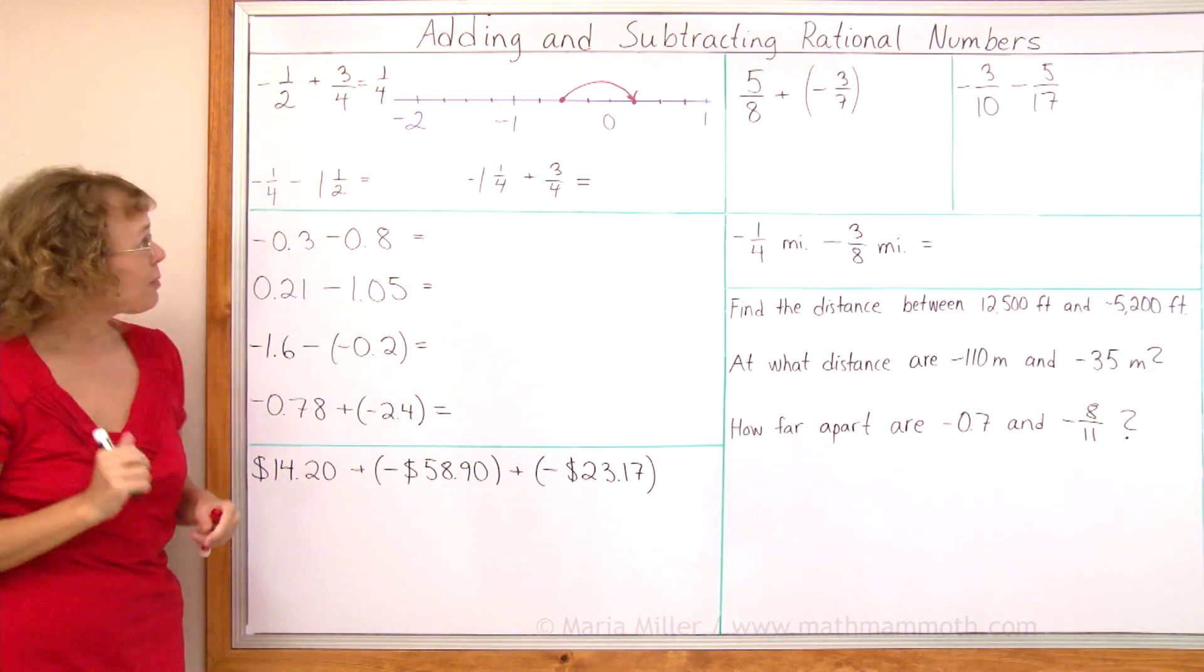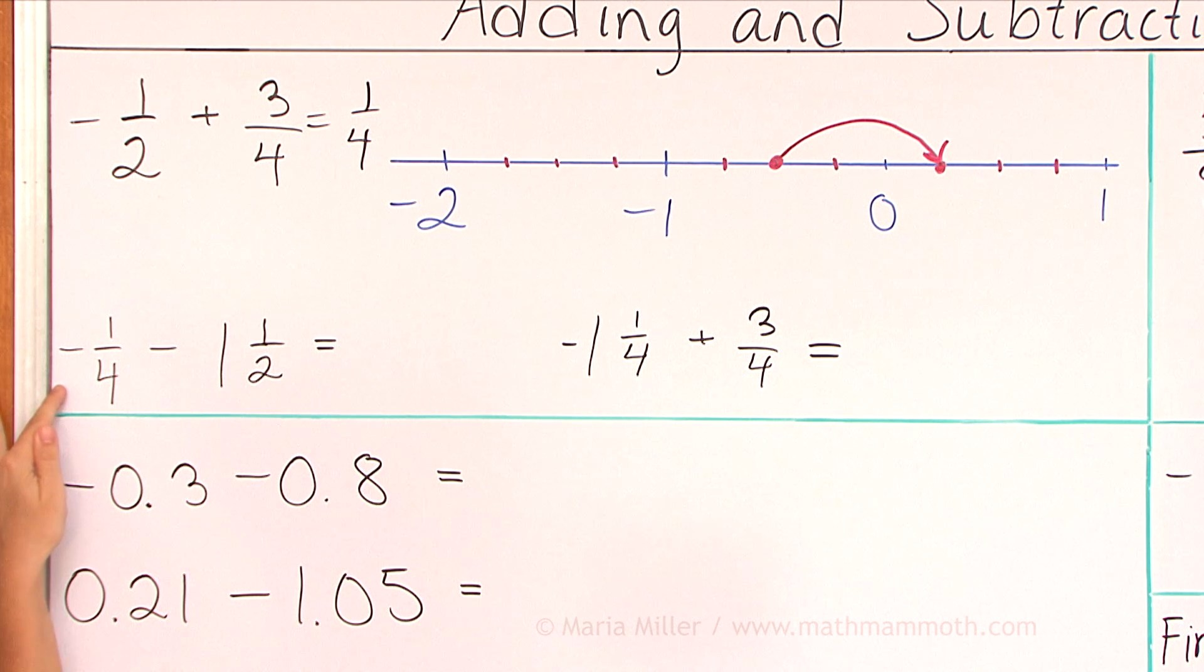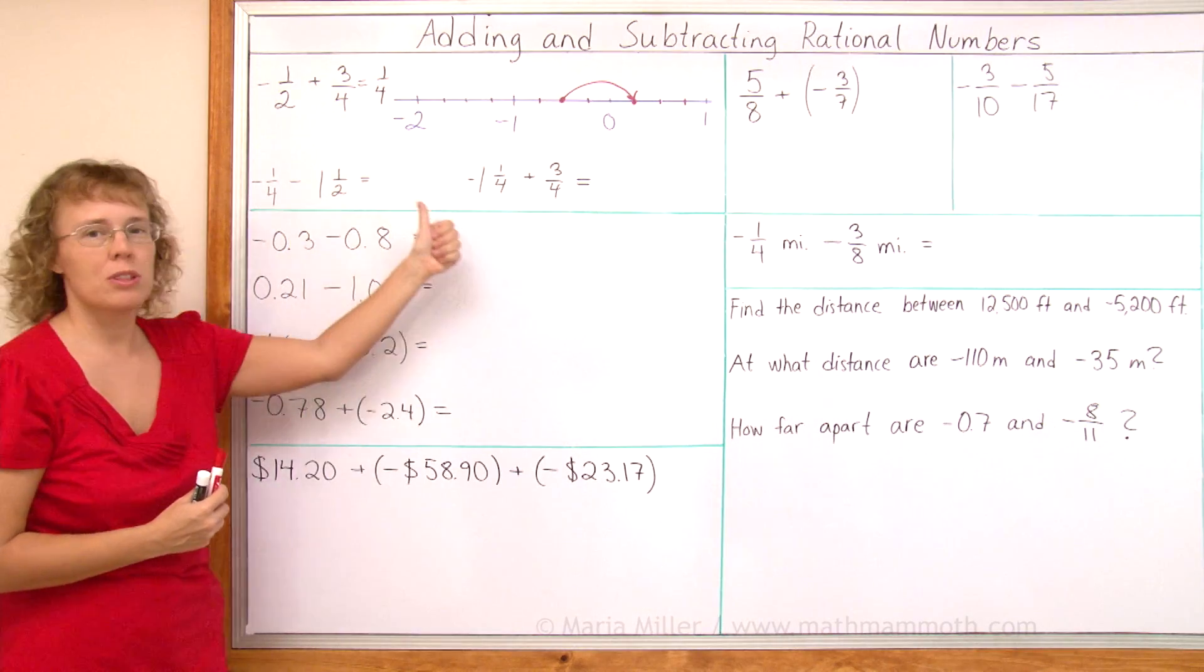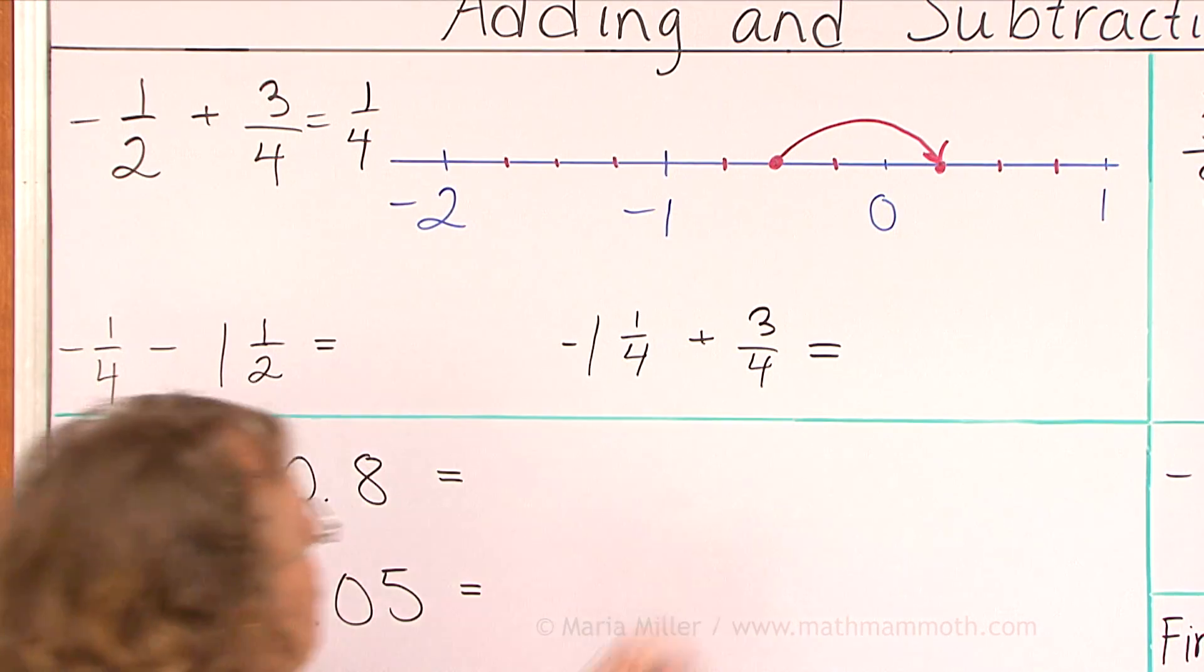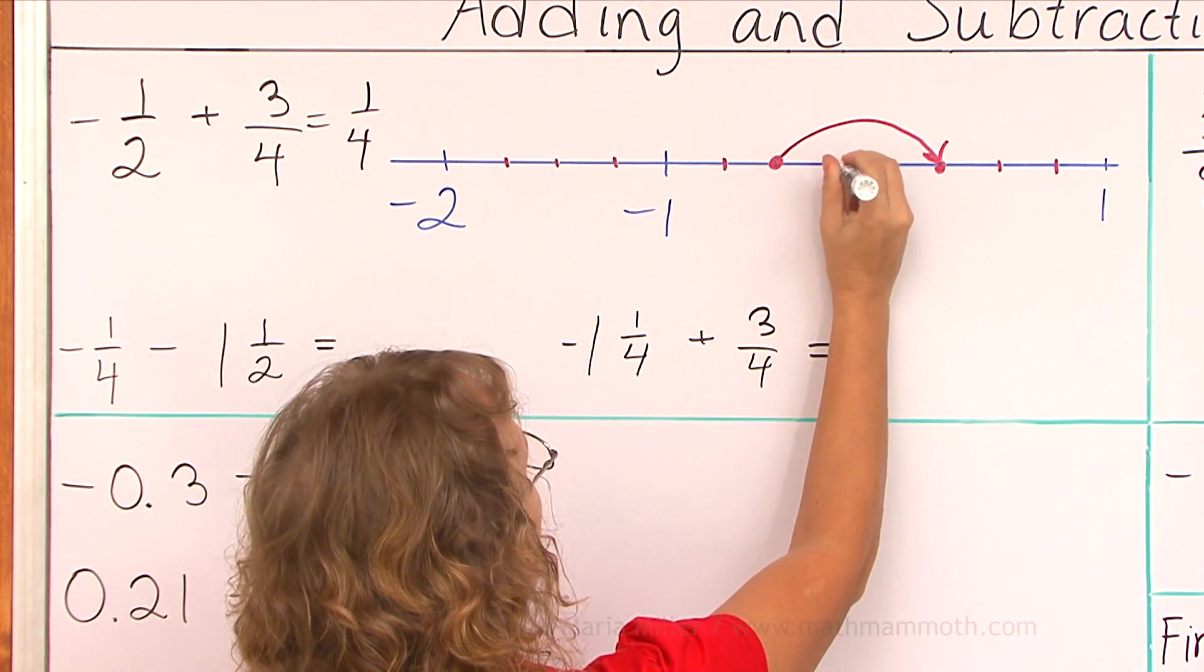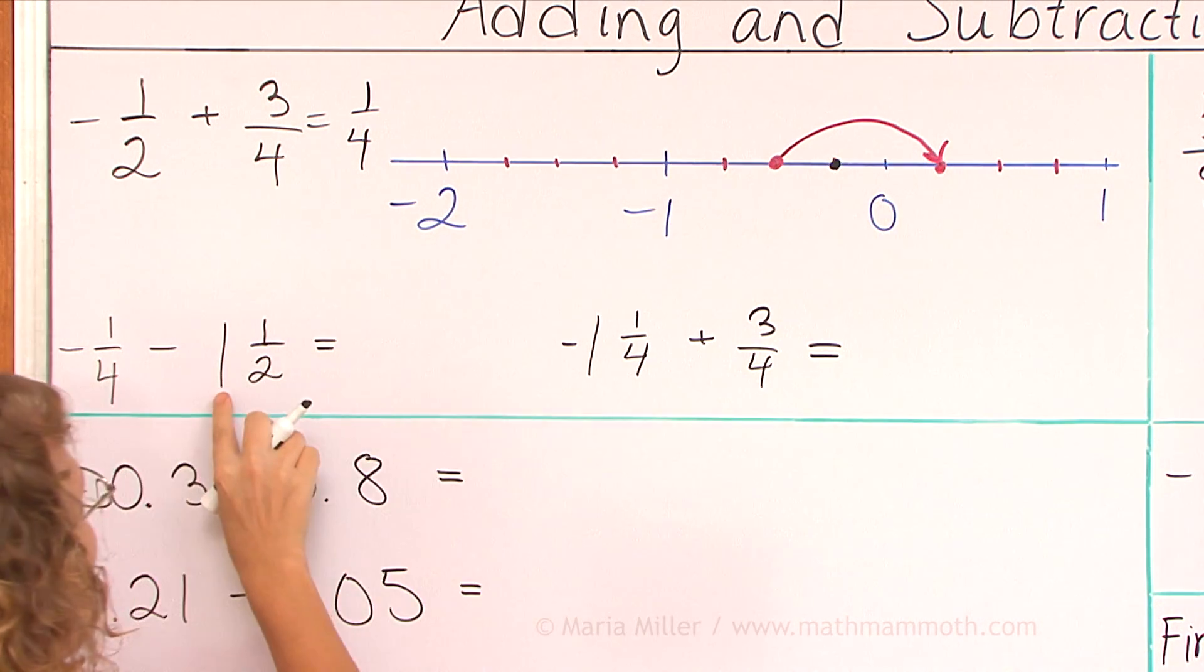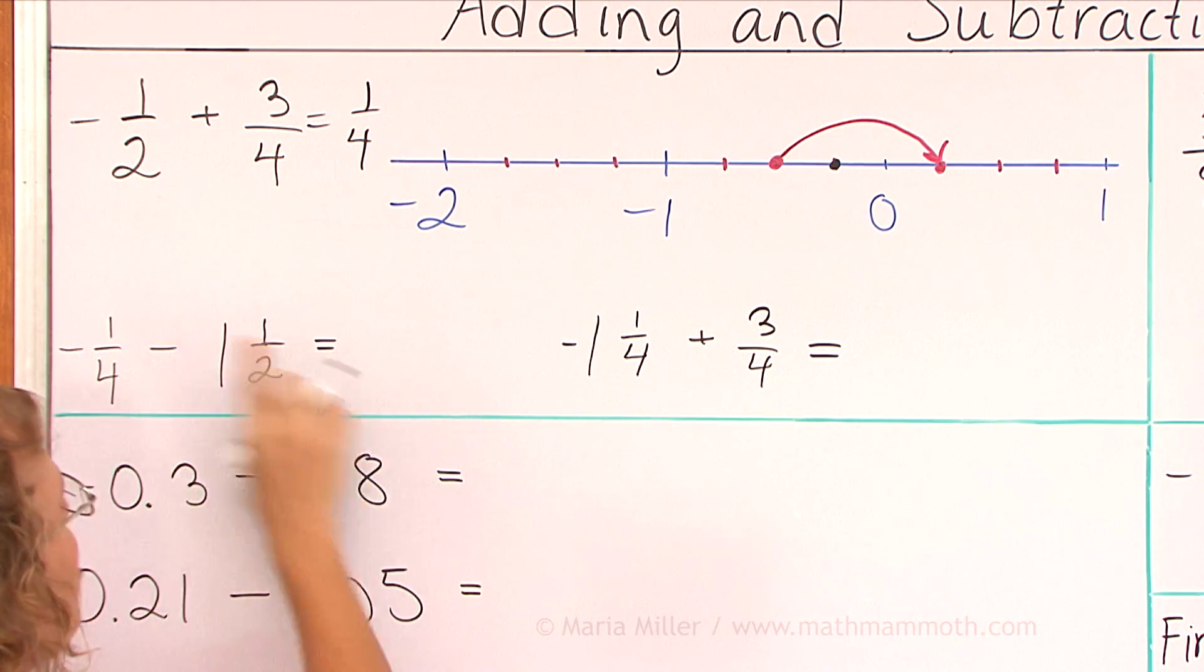Want to try this one yourself? Find negative one-fourth on the number line and then you need to subtract, which means to move towards the left, towards more negatives on the number line. Negative one-fourth should be here.